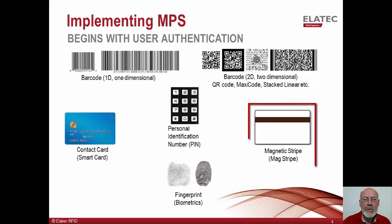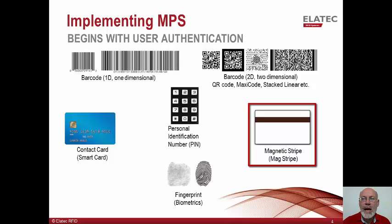Next is the magnetic stripe card. These cards can contain up to three tracks of information and are most commonly used in the U.S. for charge cards, hotel access cards, and gift cards. These inexpensive cards are often used for access control in libraries, schools, and universities.